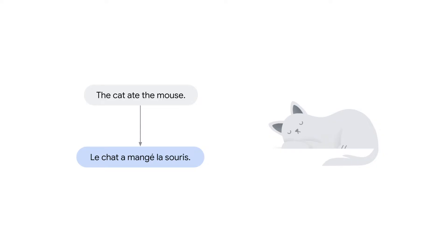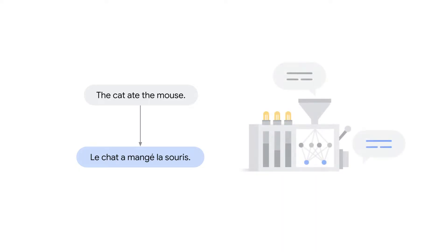To begin with, the encoder-decoder architecture is a sequence-to-sequence architecture. This means it takes, for example, a sequence of words as input like the sentence in English 'the cat ate the mouse', and it outputs the translation in French 'le chat mange la souris'. The encoder-decoder architecture is a machine that consumes sequences and outputs sequences. Another input example is the sequence of words forming the prompt sent to a large language model, and the output is the response of the large language model to this prompt.